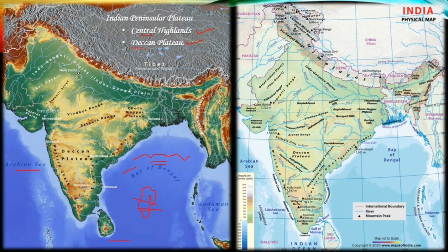The part of the Peninsular Plateau that lies to the north of the Narmada River is known as the Malwa Plateau, also called the Central Highland. The Vindhya Range lies to the south of the Central Highland, and to its northwest is the Aravalli mountain range, which gradually merges westward into the sandy desert area of Rajasthan.